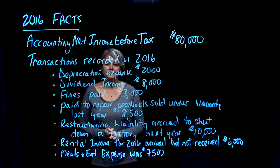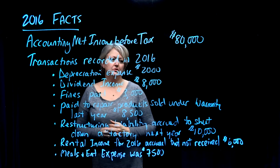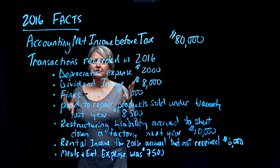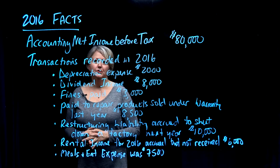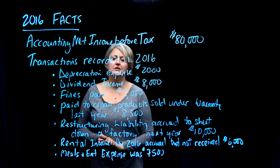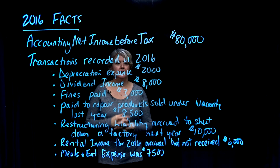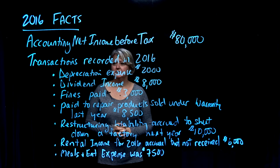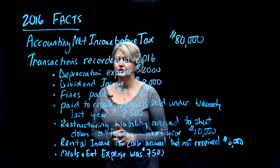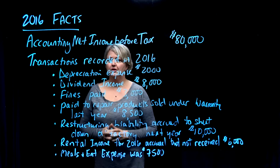More facts relevant to the 2016 fiscal year for which we're doing the tax accounting entries: you need a starting point, and the best starting point is usually the accounting net income, which is $80,000 before tax journal entries have been booked. Other facts already accounted for in the financial statements and general ledger for 2016 include the following items.